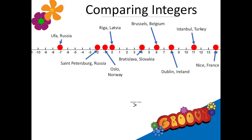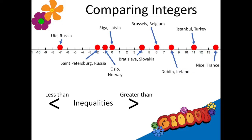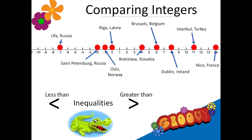To compare integers we use these symbols — greater than and less than — they're called inequalities. I'll show you how they work, but first here's a hint: the inequality symbols look so much alike, they're just mirror images of each other, so I could never remember which was which. I just think of a hungry alligator, and the hungry alligator always eats the bigger number.